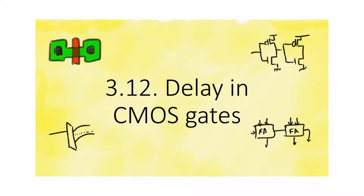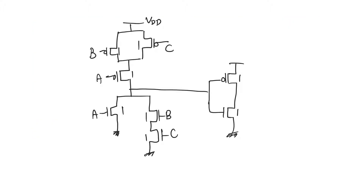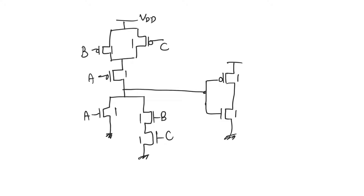Let's make an attempt at finding delay in a complex CMOS gate, because this is the first step in figuring out how to size and design gates. We have a complex logic gate performing the function f equals (a + bc) all bar, loaded by a CMOS inverter at the output. We want to find the delay at this output node.